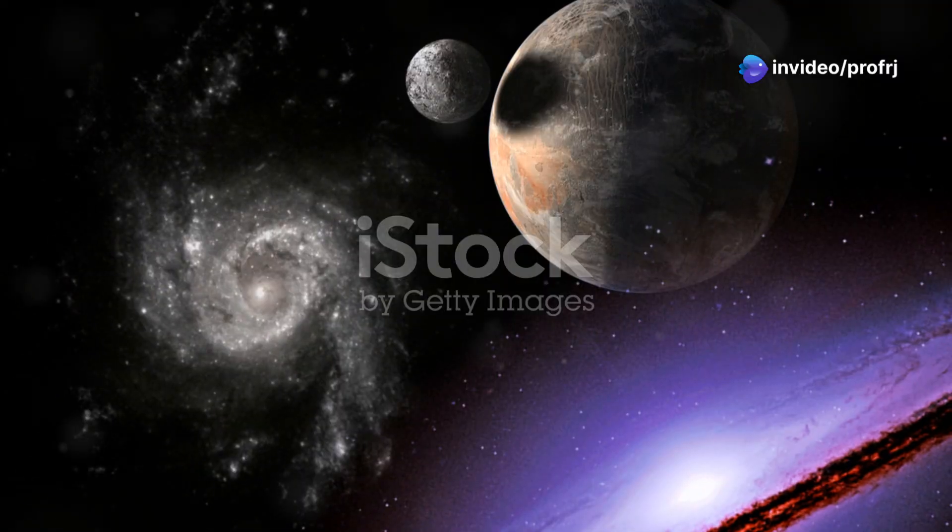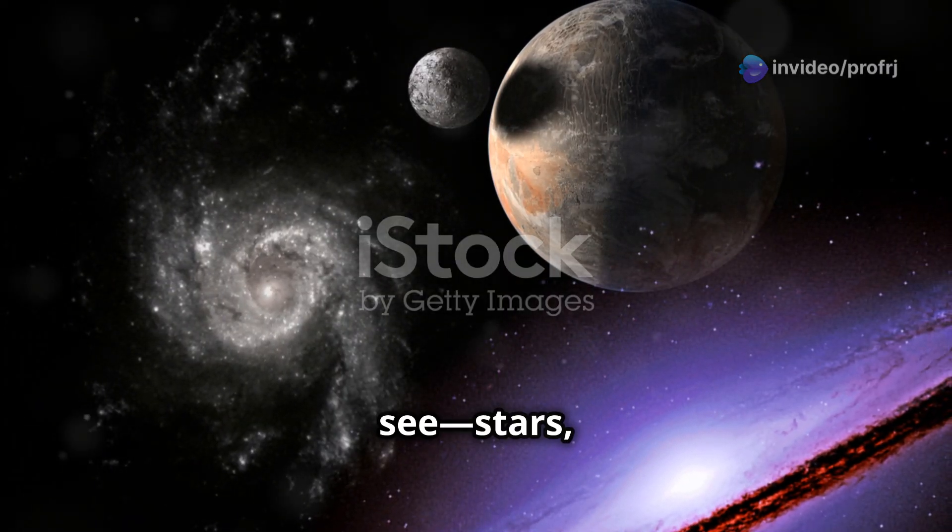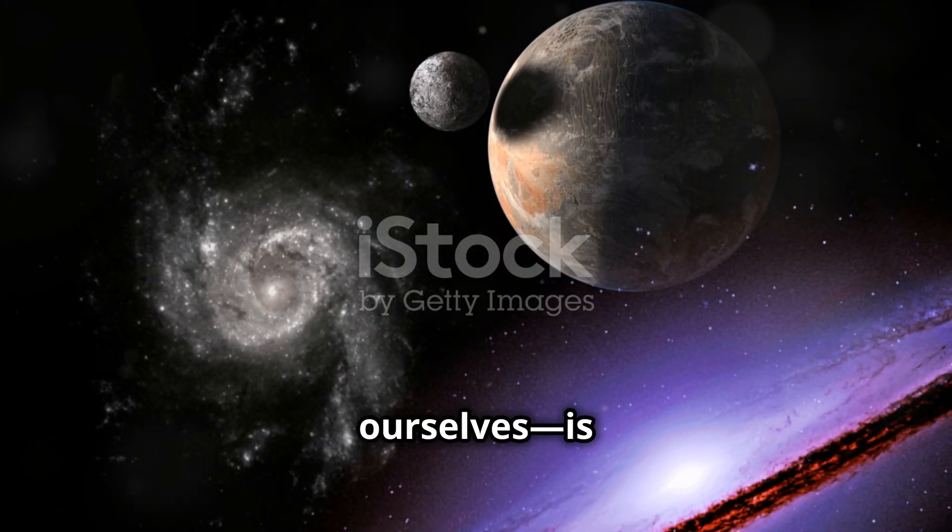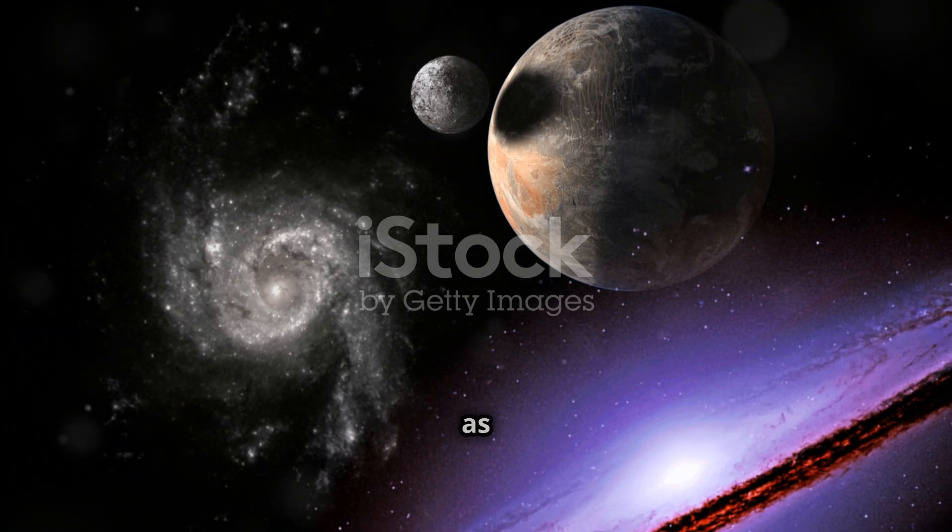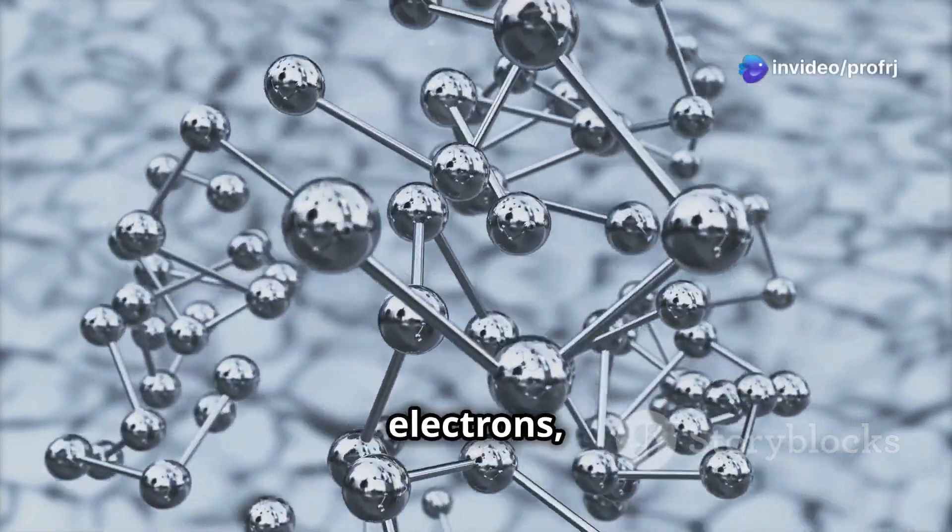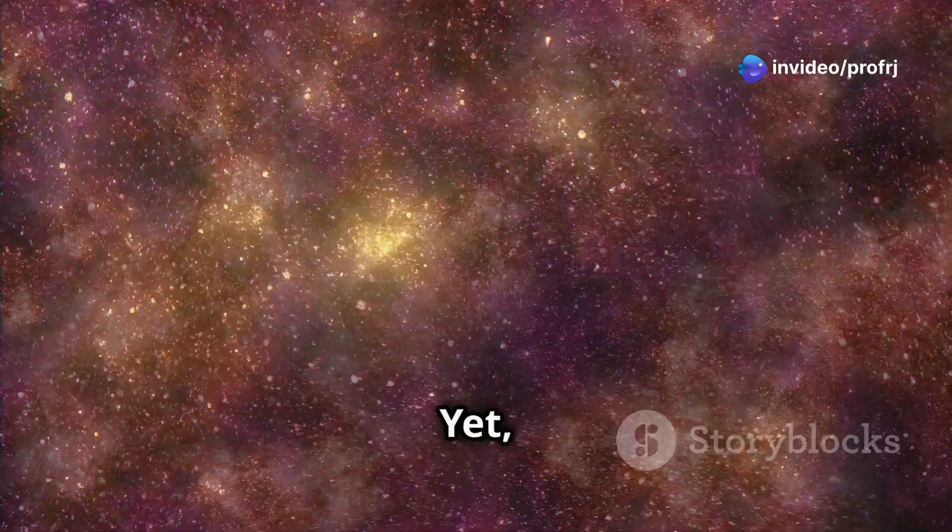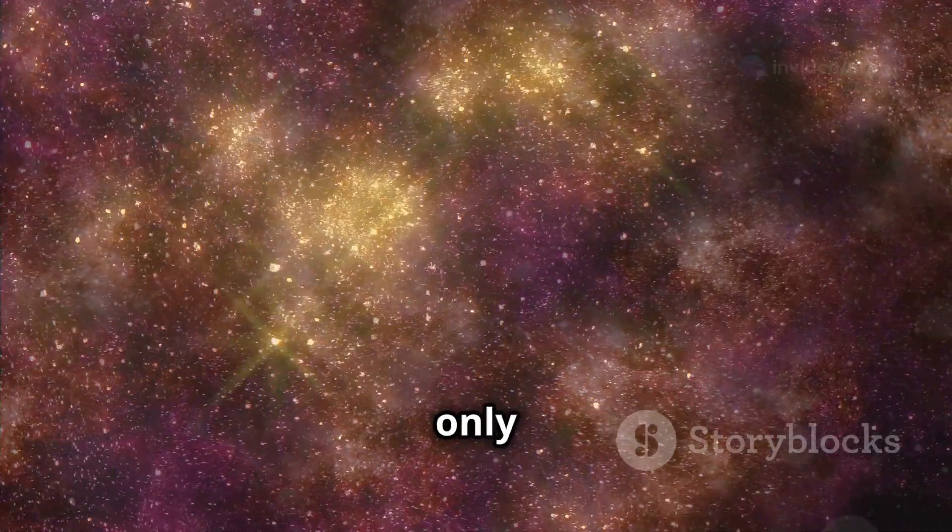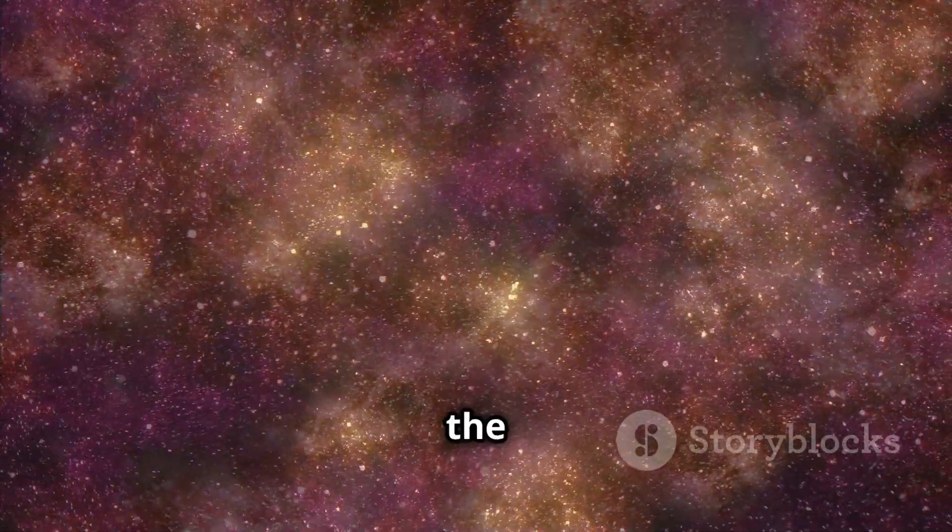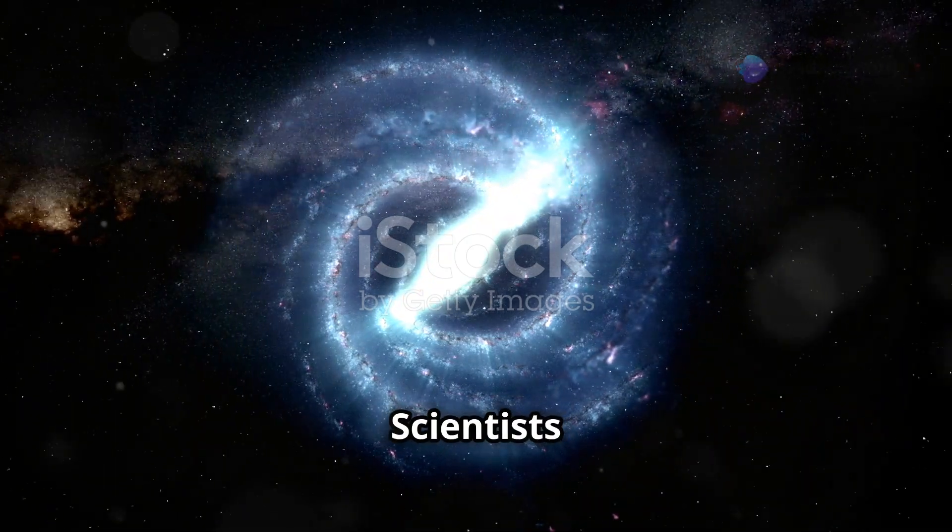Everything we see—stars, planets, and even ourselves—is made of ordinary matter, also known as baryonic matter. This includes atoms, which are made of protons, neutrons, and electrons, combining to form the elements we know from the periodic table. Yet ordinary matter makes up only about 5% of the universe. What about the rest?